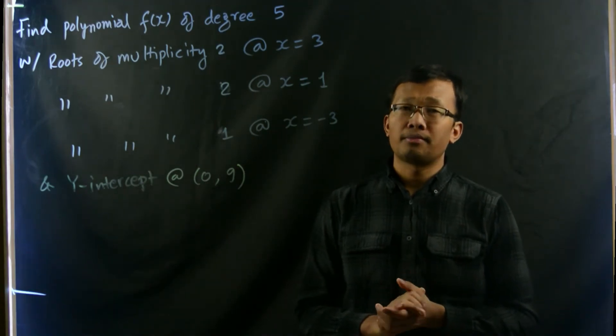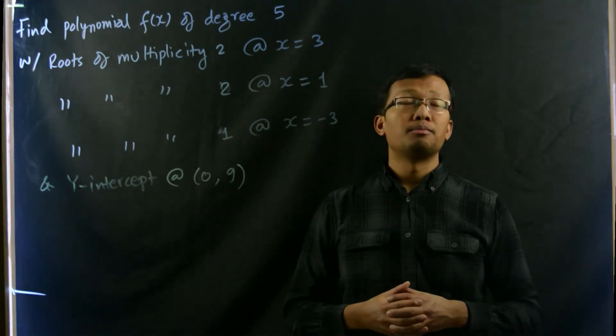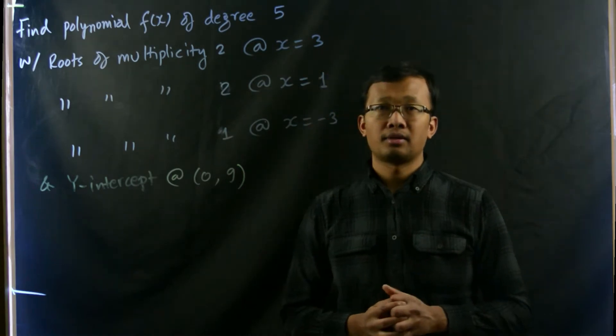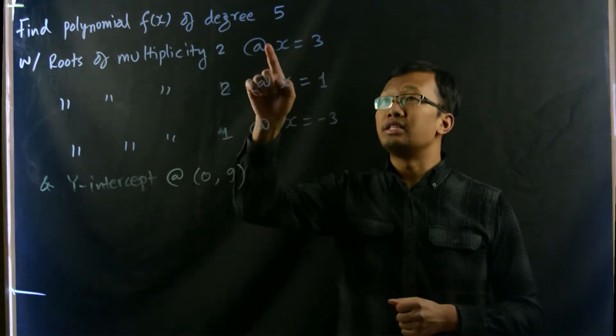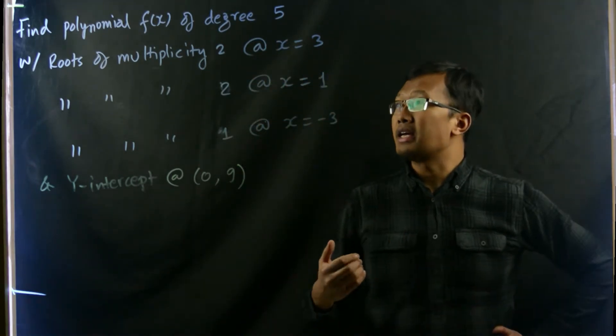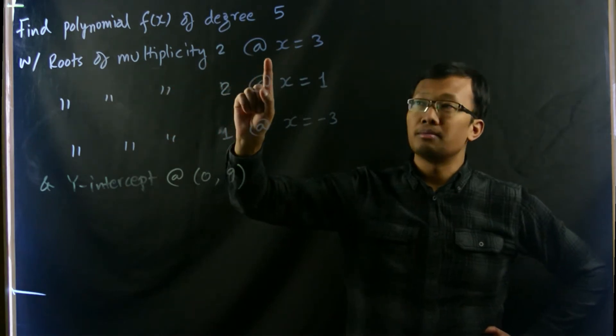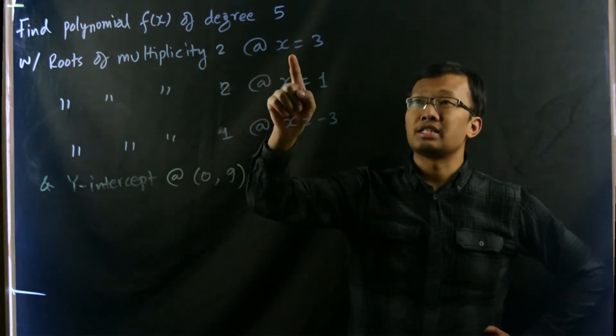Let's do a problem. Let's find a polynomial f(x) such that its degree is 5 and it has roots of multiplicity 2 at x equals 3.